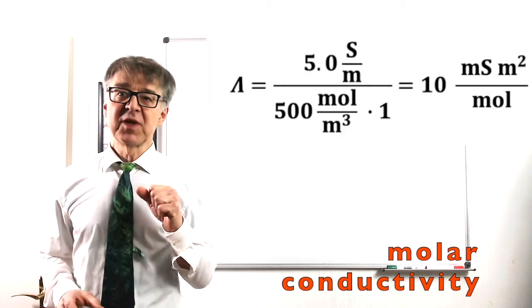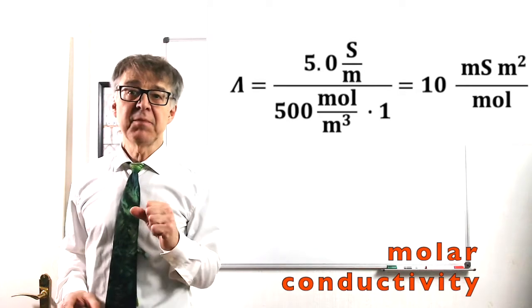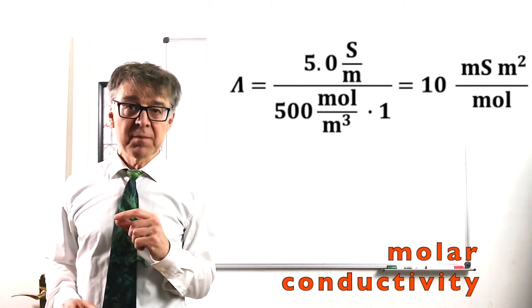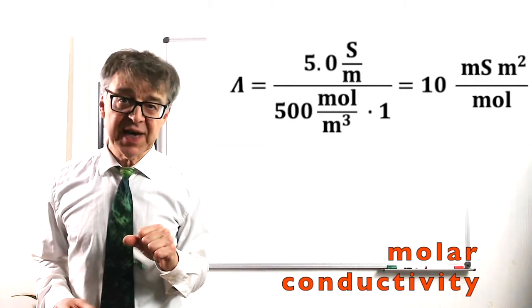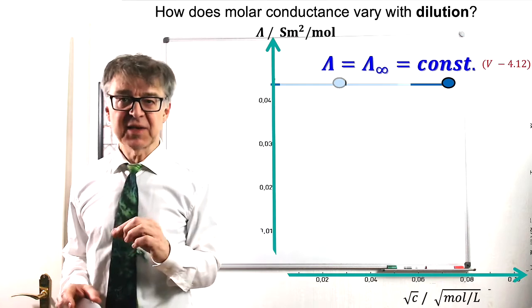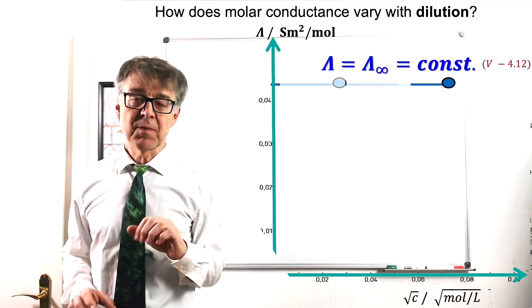Our 0.5 molar saline solution shows a molar conductivity of 10 mS m2 per mole. The molar conductivity is a measure of how well one mole of electrolyte conducts in solution. In the case of ideal electrolytes, this quantity would be independent of concentration, i.e., constant.